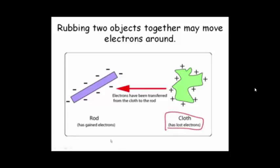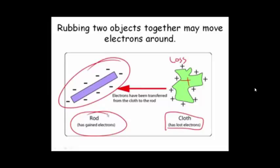The cloth, in this case, has lost electrons. Where did they go? They went onto the rod. The rod gained those electrons. So we have a loss, which means we have fewer electrons. So it's a net positive. And here we have a gain, a surplus of electrons. It's net negative.